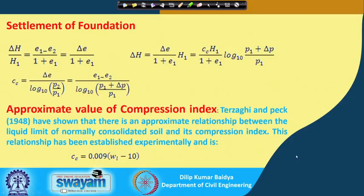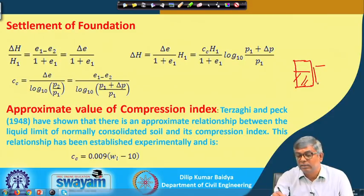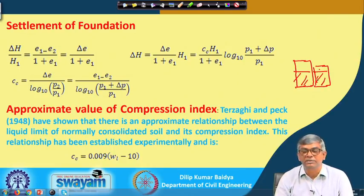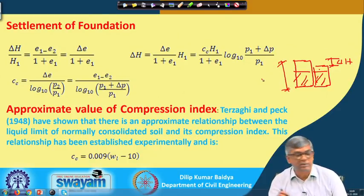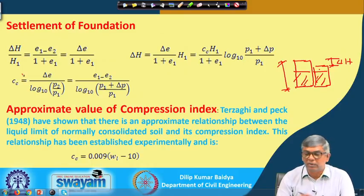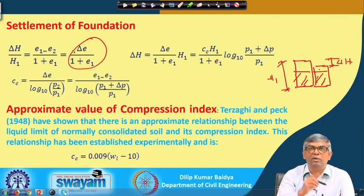In soil mechanics, when there is a layer — initially with solid and void portions — because of consolidation it compresses: the void reduces and the solid remains unchanged. The change in thickness is delta H. For one-dimensional consolidation, delta H divided by H equals delta E divided by (1 plus E). This is standard soil mechanics.